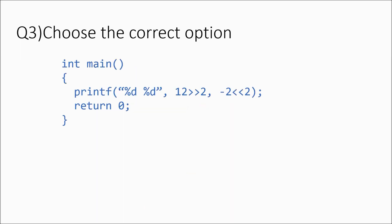Question 3: choose the correct option. We have printf with two format specifiers %d, %d, and the expressions are 12 >> 2 and -2 << 2. Options are: A) 6, -1 (division by 2); B) 1, 0 (comparison); C) 24, -4 (multiplication); D) 3, -8. The >> is a right shift operator. Let's write 12 in binary: 8+4 = 1100. After 2 right shifts, we get 0011 which is 2+1 = 3.